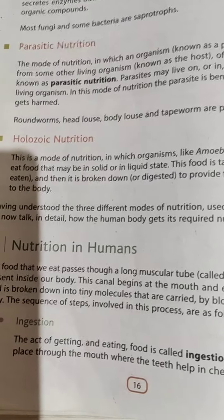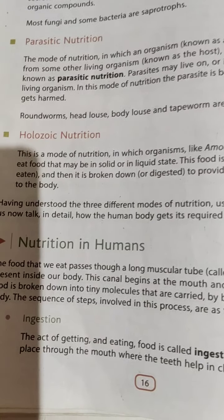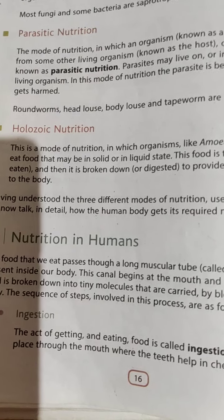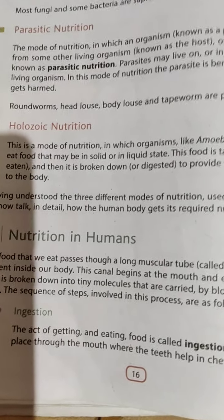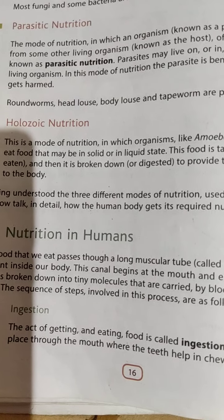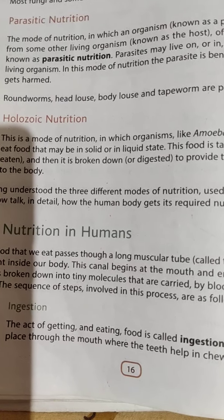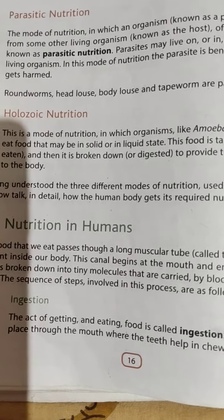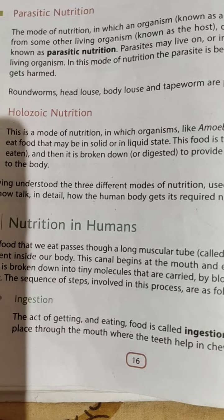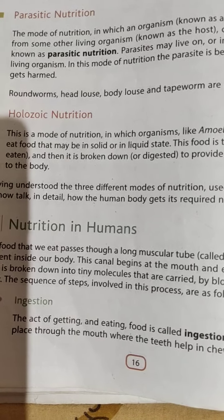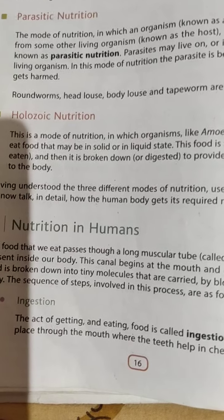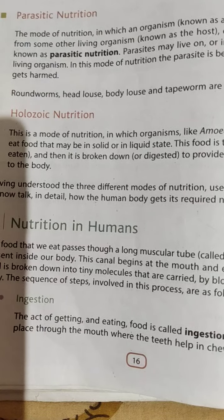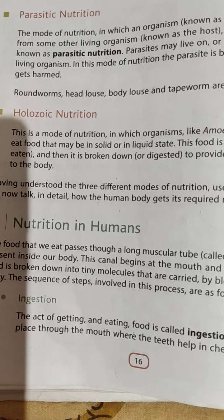The first step is ingestion — taking in food. The next step is digestion, which means breaking down of the food. The third step is absorption — absorption of digested food. The fourth step is assimilation — utilization of the absorbed food. And the last step is egestion — elimination of the undigested food.